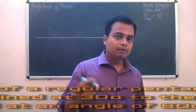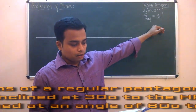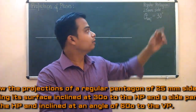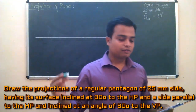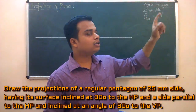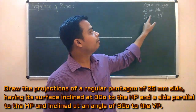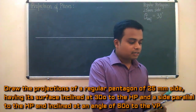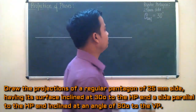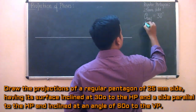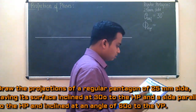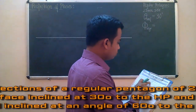Please note down the equation and parallelly we will be noting down the given data. Draw the projections of a regular pentagon of 25 mm — so it is a regular pentagon having 5 sides each equal to 25 mm — having its surface inclined at 30 degrees to the HP. So the surface is inclined at an angle of 30 degrees to the horizontal plane. Any inclination connected to HP shall be denoted by theta. Moving further, there is one side which is inclined at an angle of 60 degrees to the VP. Any inclination associated with VP shall be denoted by phi, and this edge has a magnitude of 60 degrees to the VP.